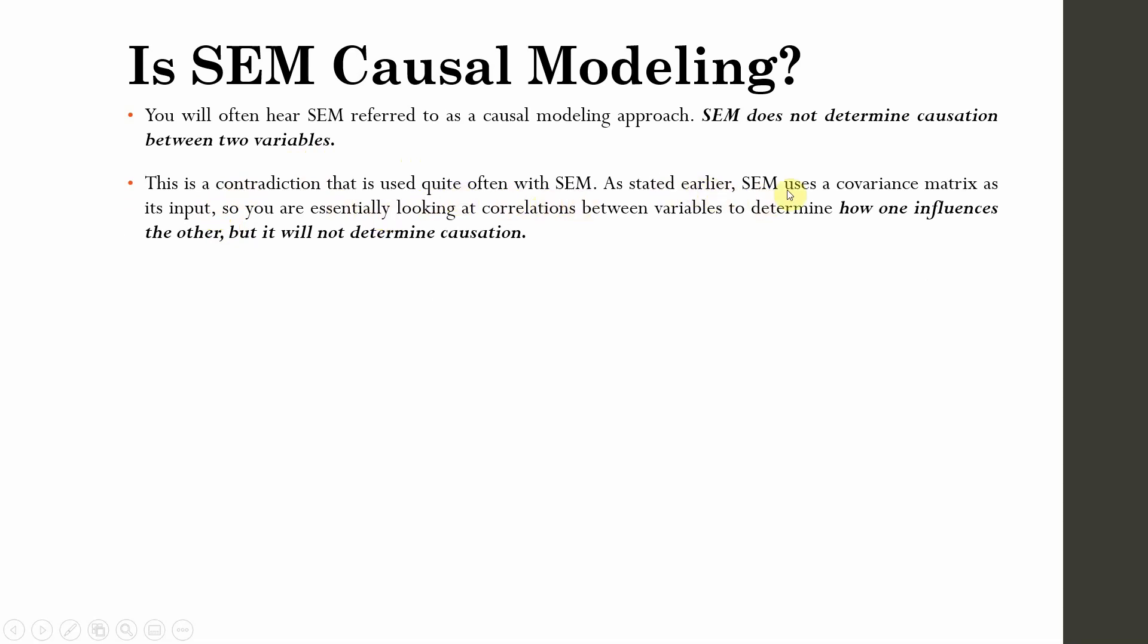As stated earlier, SEM uses covariance matrix. CBSEM actually uses covariance matrix as its input. So you are essentially looking at correlations between variables to determine how one influences the other. But it is not for determining causation.